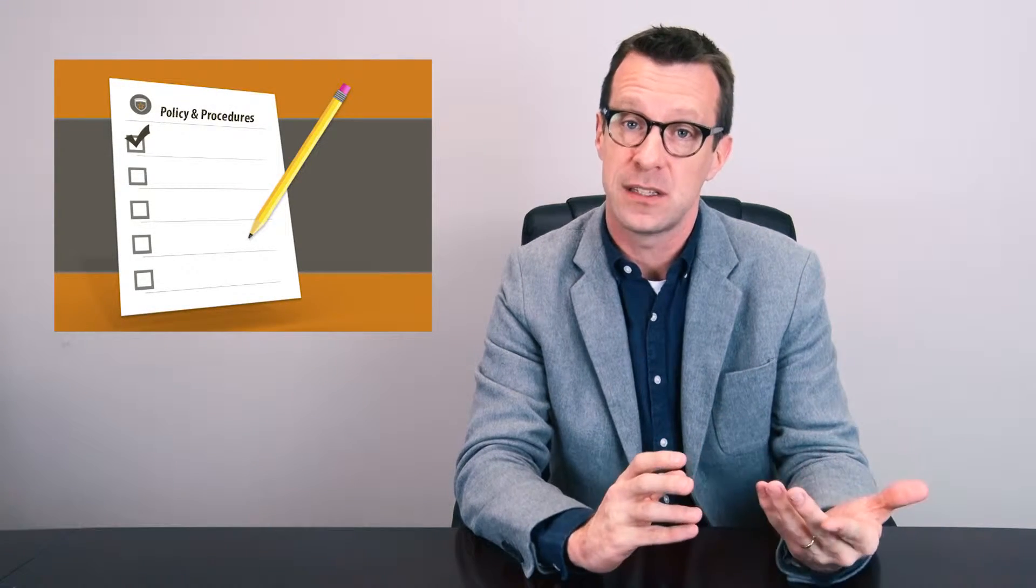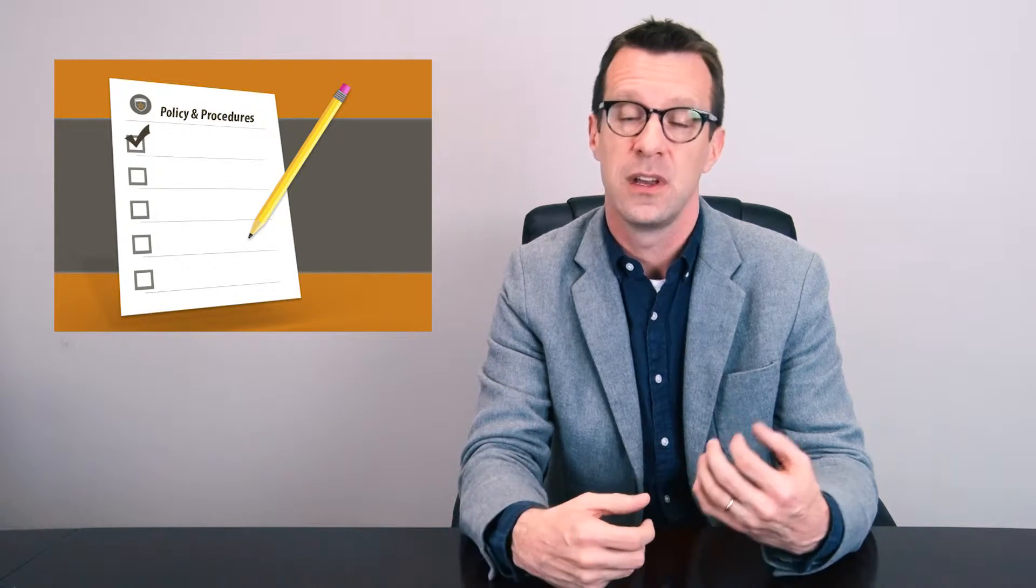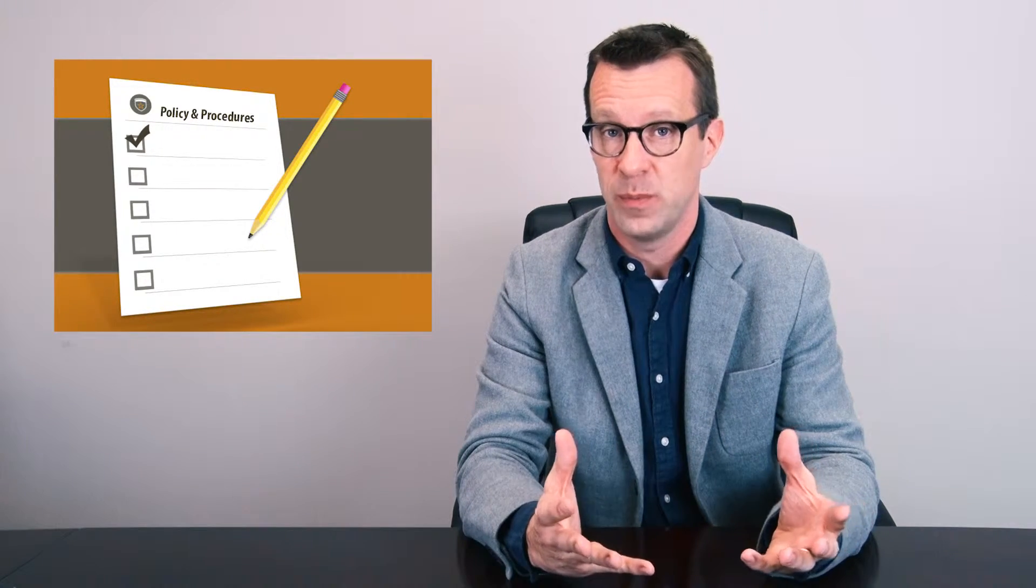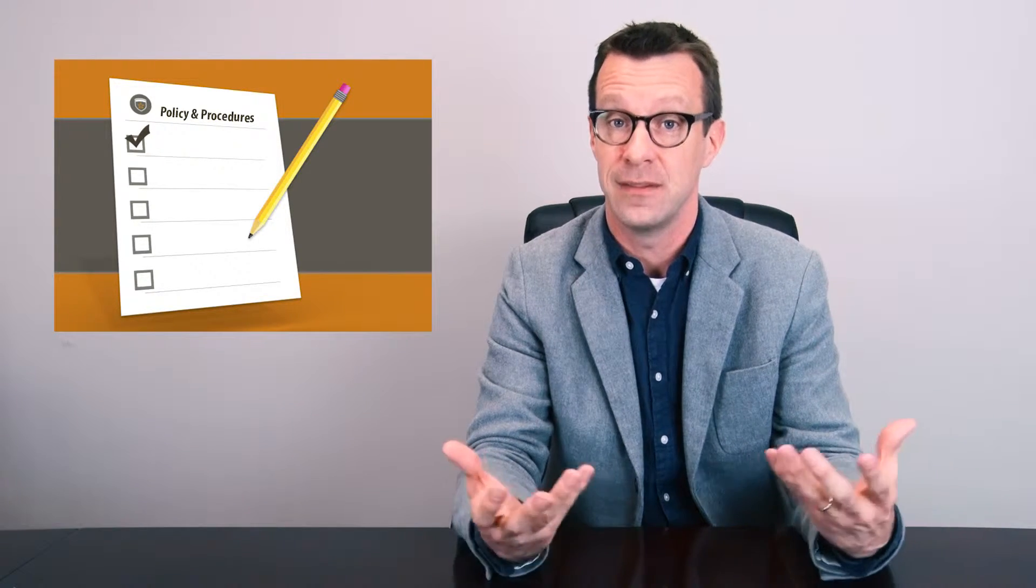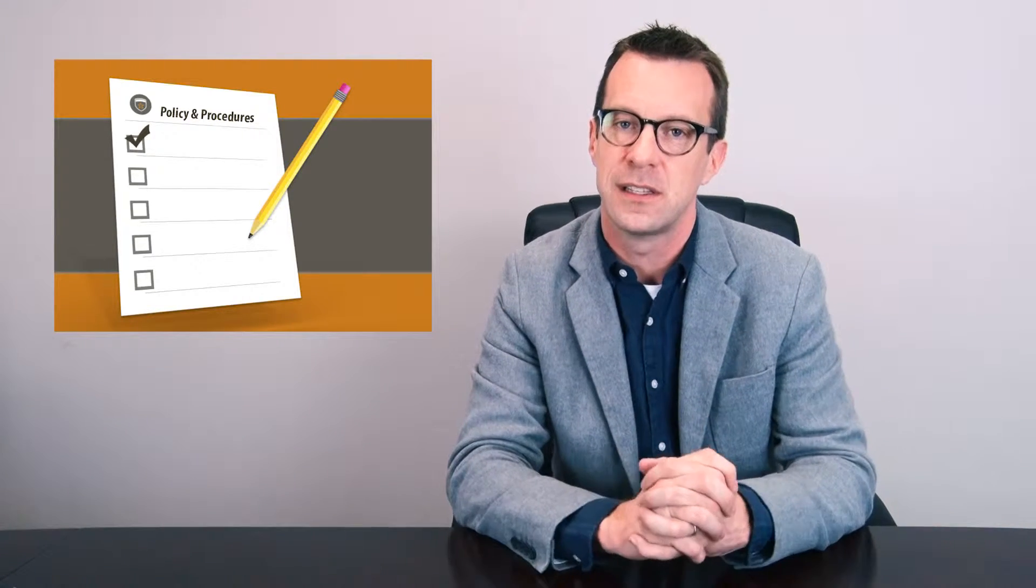An example of a test of control that an auditor would perform would be a review of policy. If you have stated that you have a policy that governs information security or logical access or human resources or physical security application development, a test of that would be that the auditor reviews the document to ascertain that it does exist and it is in place and that people know about its existence.